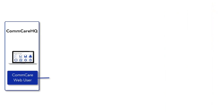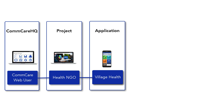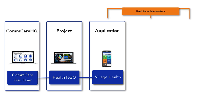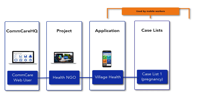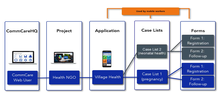Congratulations! You just learned how to set up your first mobile application project. Let's take a look at what we did. We entered ComCare as a web user. We created a project space for our health NGO and an application to help our community health workers track the health of their village. Then, to enable our health workers to start registering pregnant women in their village, we created a case list. Finally, we entered the register form so we can begin adding questions to our application. Remember, we will eventually have several forms in this case list to collect more information over time. We might even have several different case lists pertaining to different aspects of the village's health.